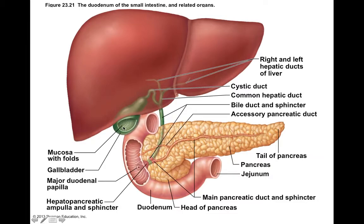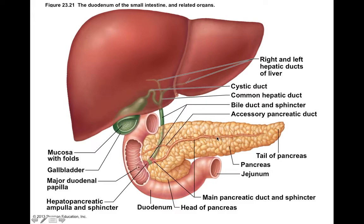The gallbladder has smooth muscle in its wall. The hormone cholecystokinin, or CCK, released by the small intestine, is the major stimulus causing the gallbladder to contract and squeeze bile down the cystic duct and common bile duct toward the hepatopancreatic ampulla. The vagus nerve also stimulates contraction but more weakly. Pancreatic juices made by the pancreatic acini drain through the main pancreatic duct and exit at the same spot, so bile and pancreatic juices are co-released into the duodenum.